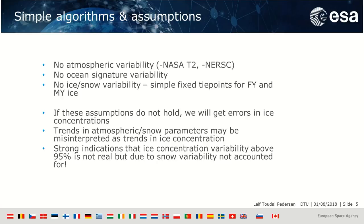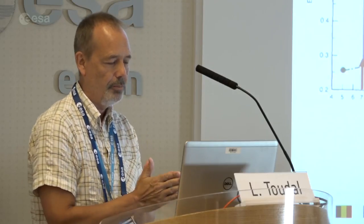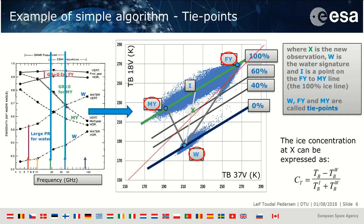If these assumptions don't hold we get errors in the ice concentration — biases, larger variations, larger uncertainties — and potentially trends in atmosphere or snow parameters being misinterpreted as trends in ice concentration. There are strong indications from validation work in both the US and Europe that ice concentration variability above 95% is not real but is due to variability in snow not accounted for. The wetness and grain size of snow causes an uncertainty of easily five percent variation in ice concentration.